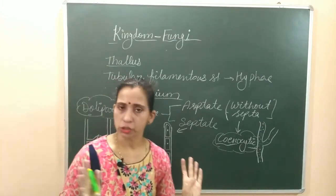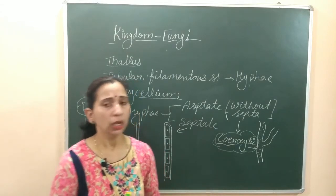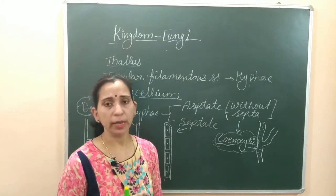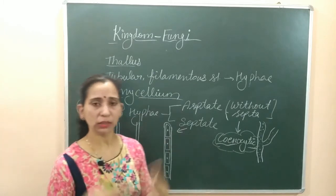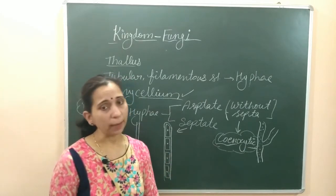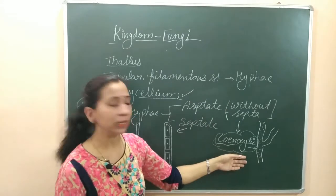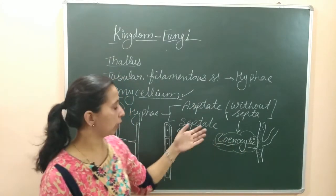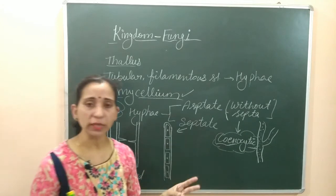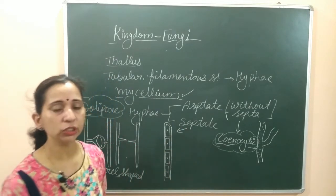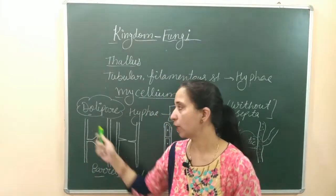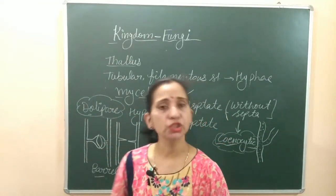So we discussed the general structure of the fungi. Normally they have a thallus-like structure, but in multicellular fungi they have a filamentous tubular structure known as hyphae. Many hyphae form a network known as mycelium. Hyphae can be septate or aseptate. Aseptate hyphae create a coenocytic condition, while septate hyphae have uninucleate or binucleate conditions, and their septa can be simple perforated or dolipore septa.